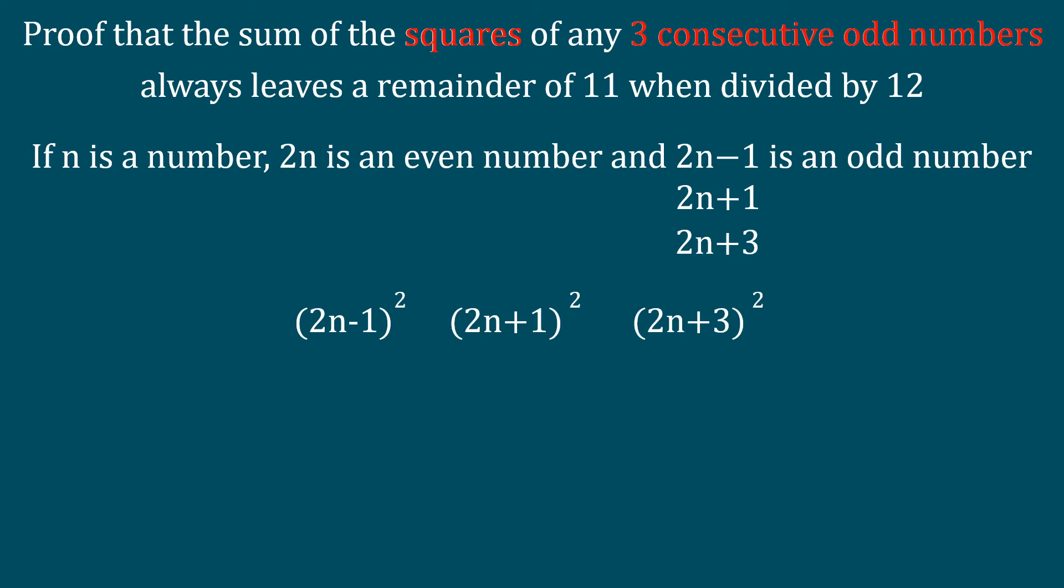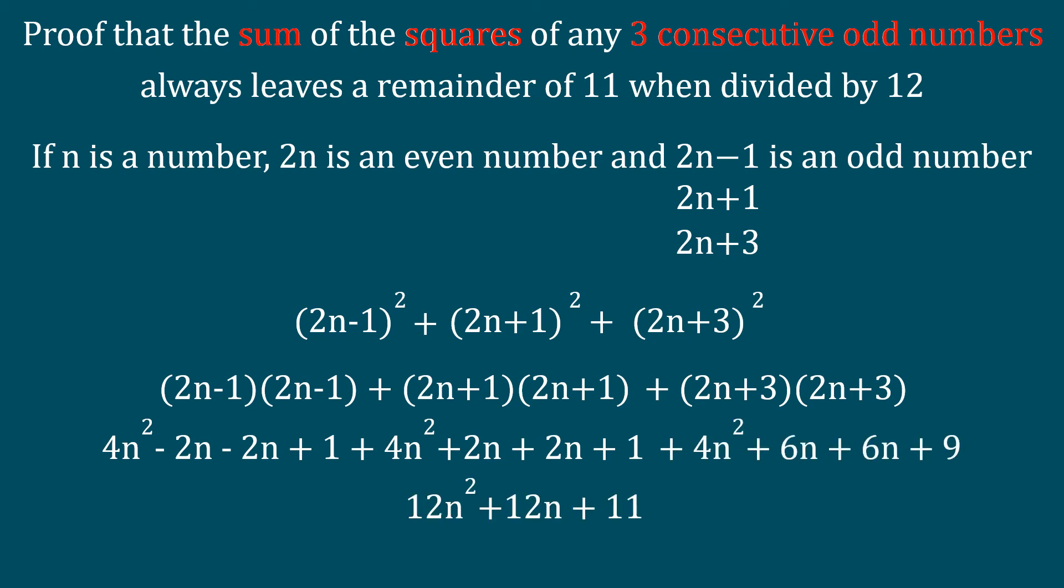We square them and add them together. We then multiply out, expand and collect like terms, getting 12n² plus 12n plus 11.